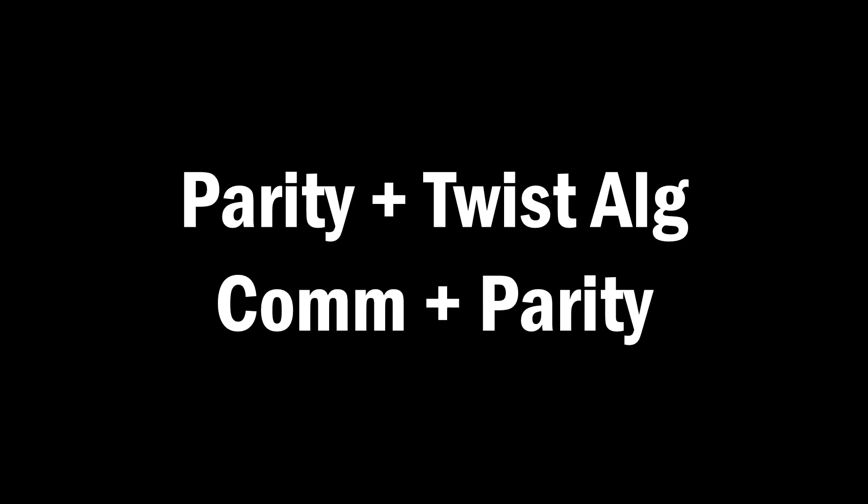You might be wondering, why don't you just do parity normally and do the twist alg at the end versus what I'm doing here, which is a commutator followed by parity. The difference between these two is a commutator versus a twist alg. And I would say in general, twist algs take at least 1.5 times as long as most commutators. So even though it takes more thinking to get used to this at first, you'll ultimately want to use a method that has a faster combination of algs.